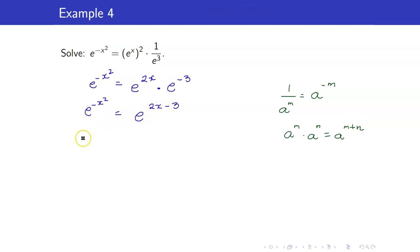I now have the same base, e. So, we can equate the exponents. Negative x squared is equal to 2x minus 3. And this is a quadratic equation. So, one side must be set to 0. So, I have x squared plus 2x minus 3. And the factors would be x plus 3, x minus 1. So, therefore, x is equal to negative 3 or 1.